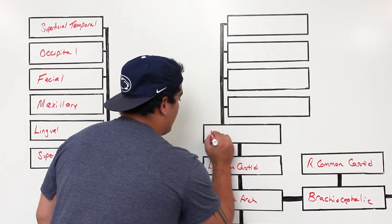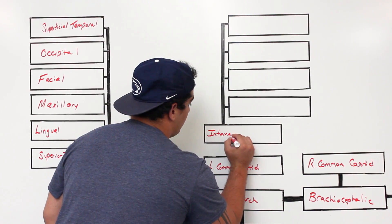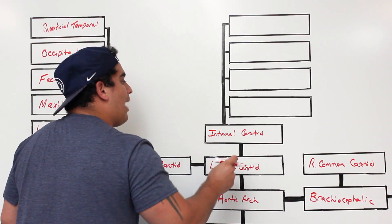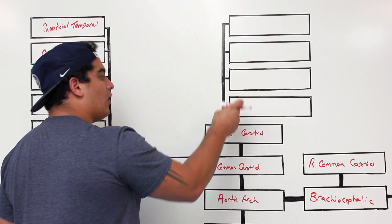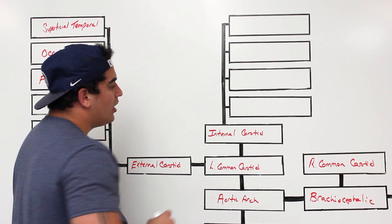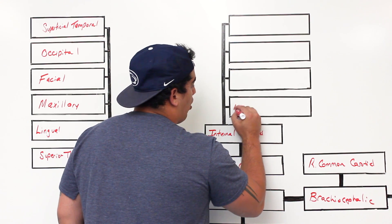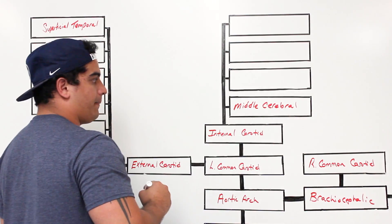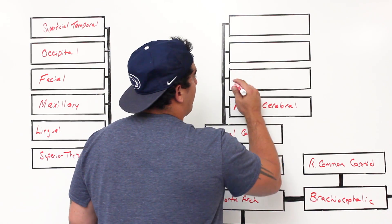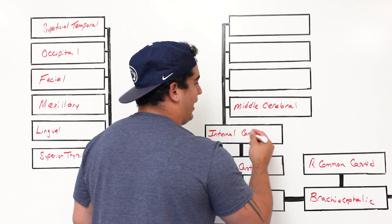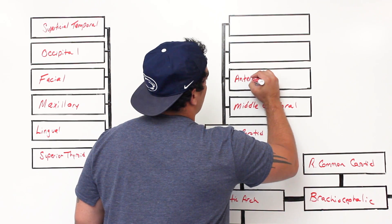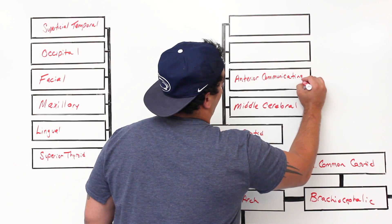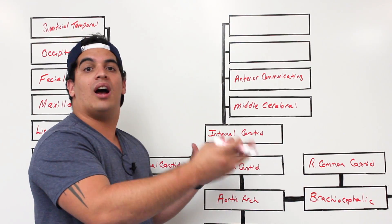The other branch from the left common carotid is the internal carotid artery. It moves upward, passing through structures like the carotid canal and foramen lacerum. It gives off a branch called the middle cerebral artery. As it continues, it gives off an anterior communicating branch, which will interact with the other internal carotid artery from the right side.